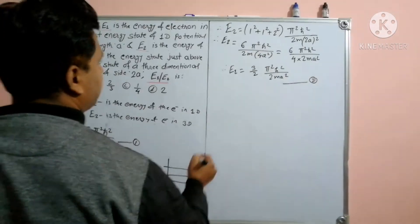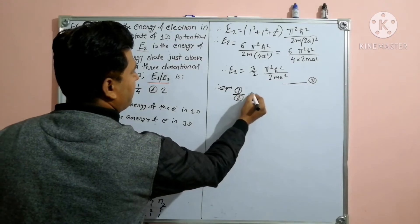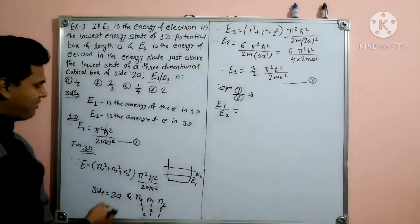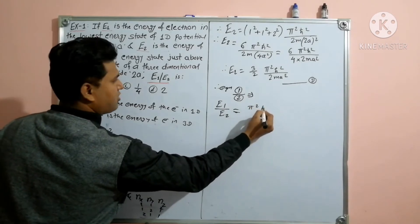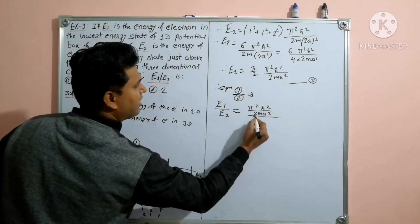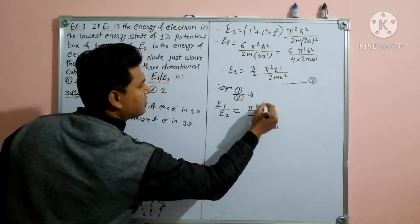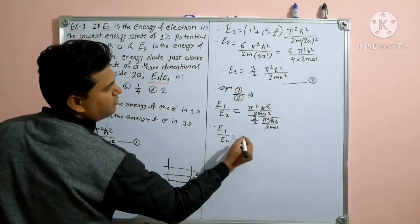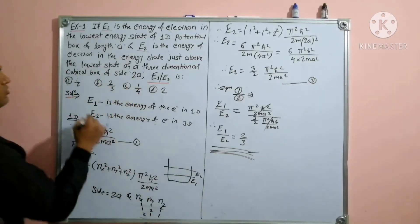Now dividing equation 1 by equation 2, we get E1/E2 = [π²ℏ²/(2mA²)] / [(3/2) × π²ℏ²/(2mA²)] = 2/3. So E1/E2 = 2/3, and option B is correct.